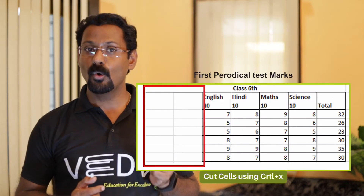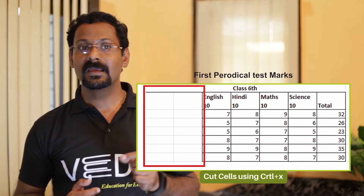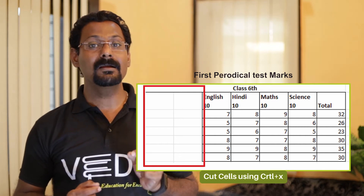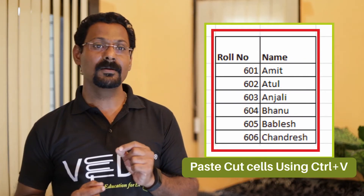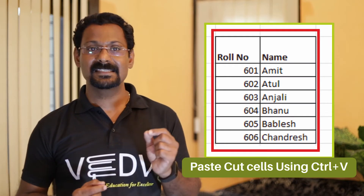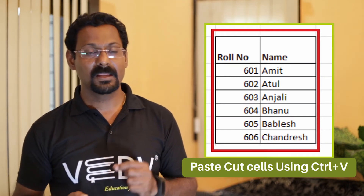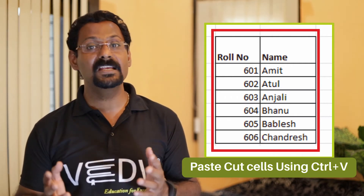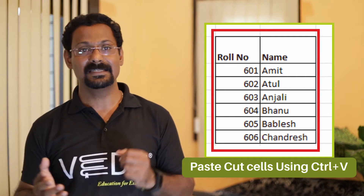Cut and paste: to move data from one position to another, Excel provides cut and paste options. To cut and paste, follow these steps. Number one: select the cell, row, or column you want to cut. Number two: in the Clipboard group on the Home tab, click on Cut or press Ctrl+X. Number three: select the cell where you need to paste the content. Number four: in the Clipboard group on the Home tab, click on Paste or press Ctrl+V.